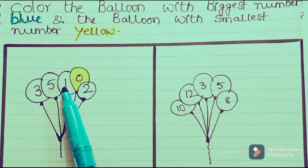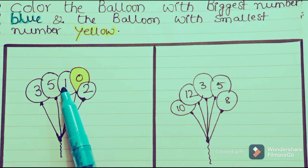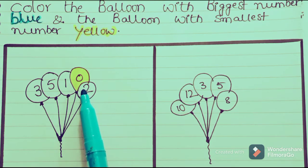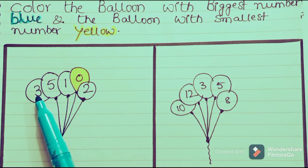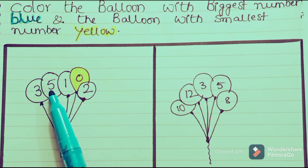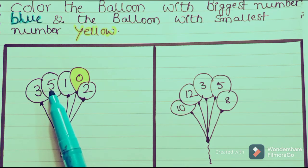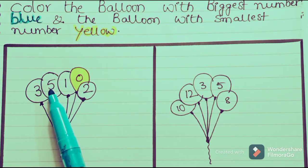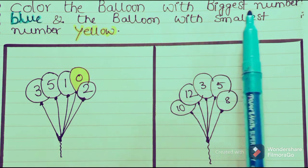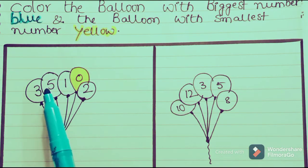After zero, the next number is 1. After 1, 2 comes; after 2, 3 comes; and after 3, 5 comes. The number which comes later is the biggest number and the number which comes earlier is the smallest number. So we have to color the balloon with the biggest number blue — we should color this balloon in blue.